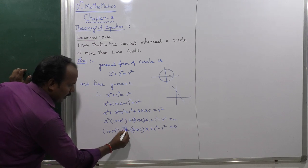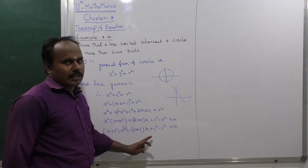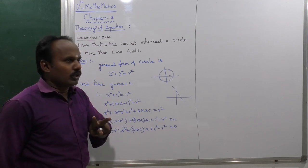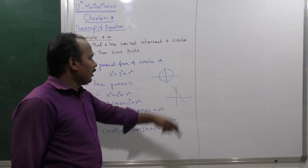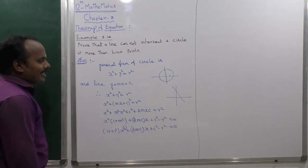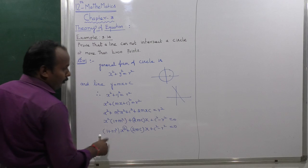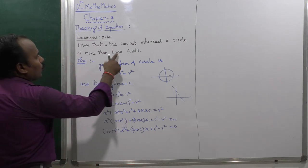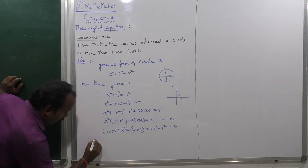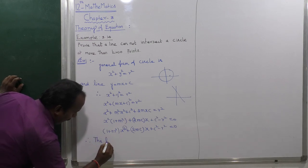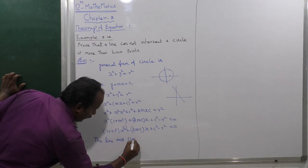The highest degree is 2, so this is a quadratic equation. A quadratic equation gives at most 2 solutions. Therefore, the line meets the circle at most at 2 points.